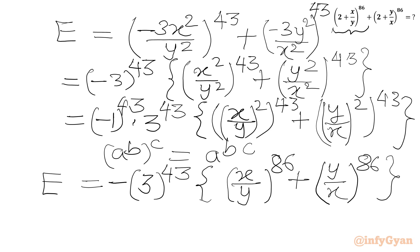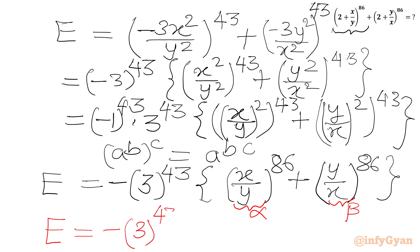Now we consider a substitution. Let α = x/y and β = y/x. So we can write E = −3^43 · (α^86 + β^86).